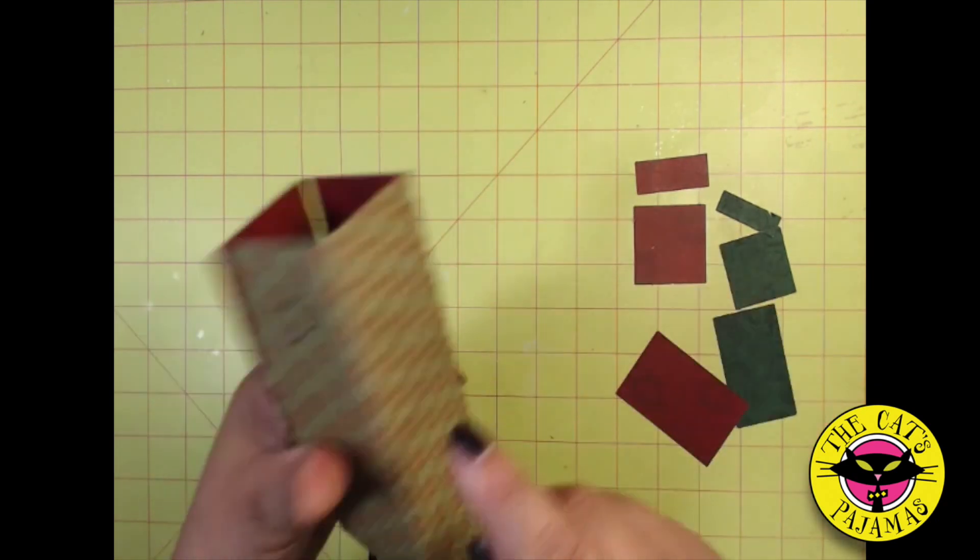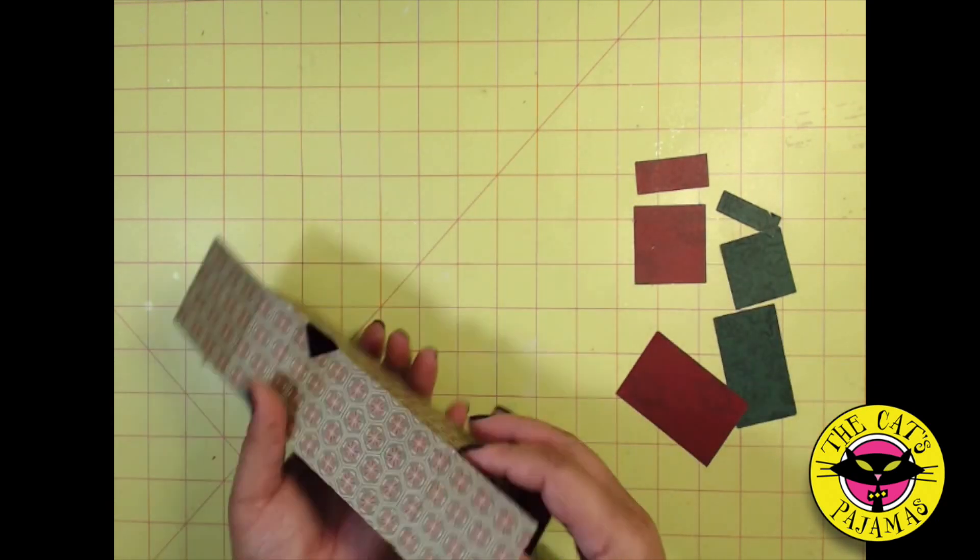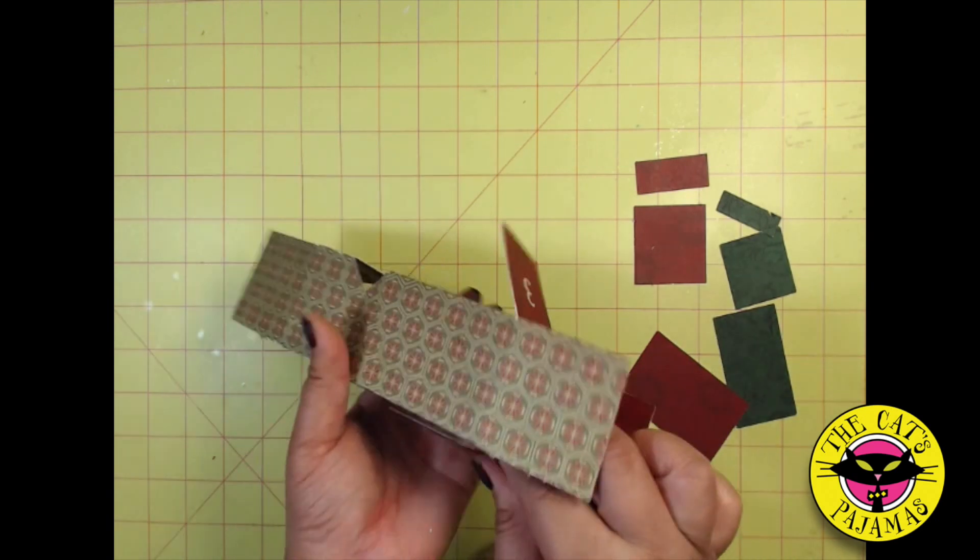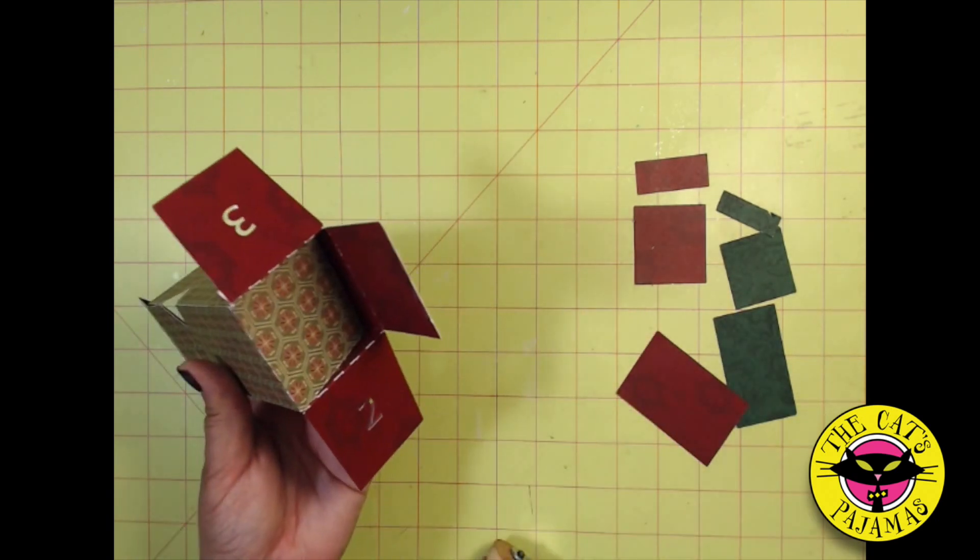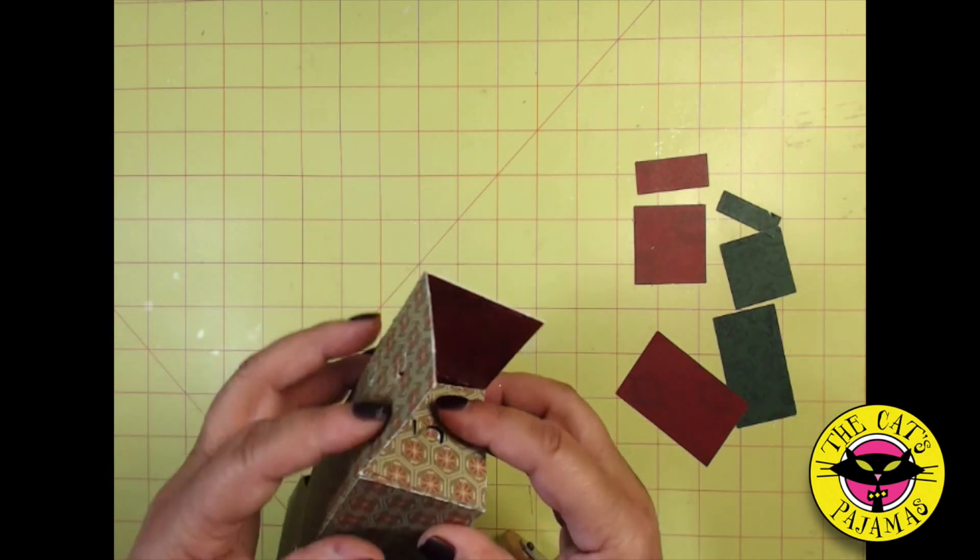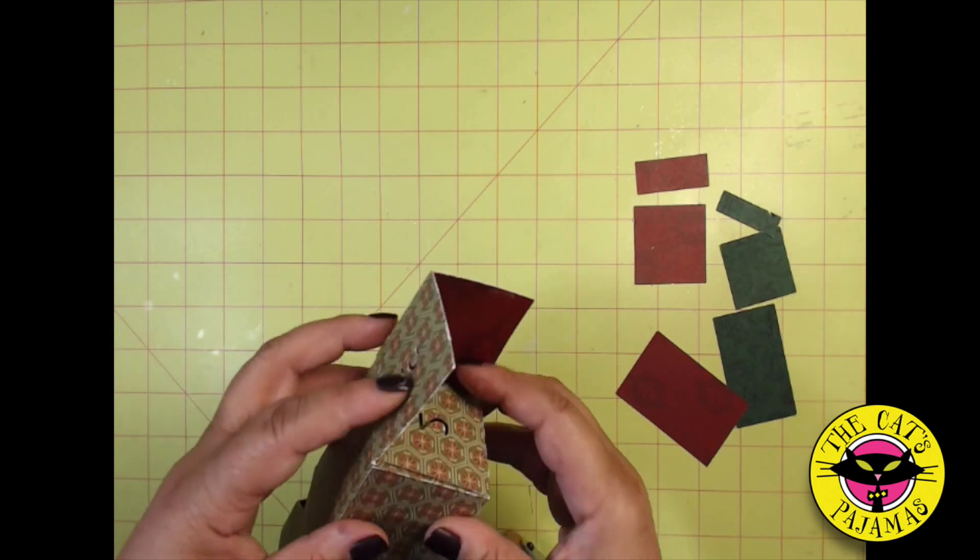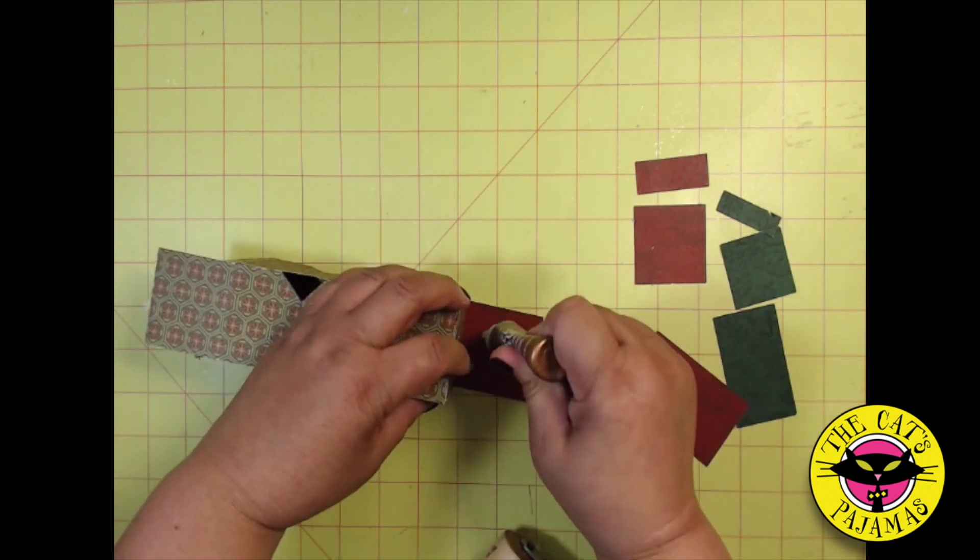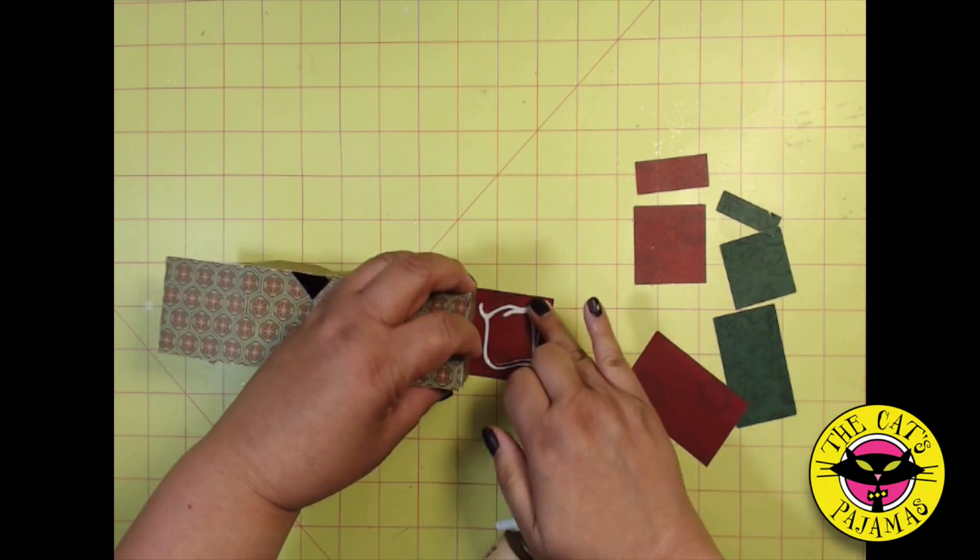Now the tabs with the numbers on them, those are going to be at the bottom. Fold one of the tabs with no number down first into the box. Then fold in the tab with the number 2 and then the number 3. And then the final tab, you add glue and fold that in.